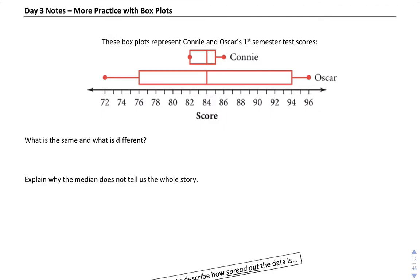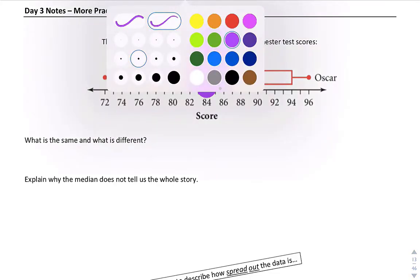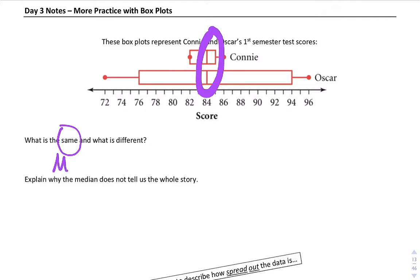Today we're going to start with this example in class. These box plots represent Connie and Oscar's first semester scores. We're going to talk about what's the same and what's different. If you take a look at it, one thing is the same: this middle line here, otherwise known as the median. So the median is the same, but if you take a look at the scores, Connie's scores are lumped together a lot more than Oscars. Oscars are more spread out.